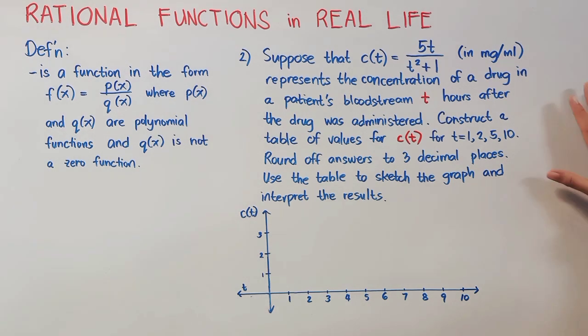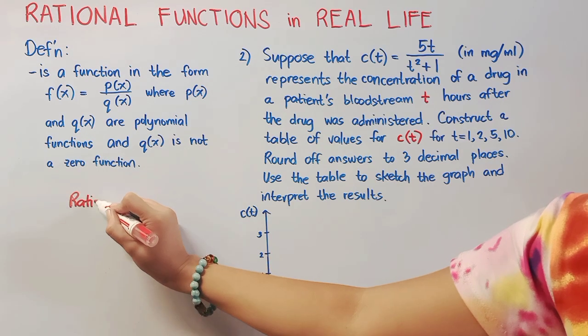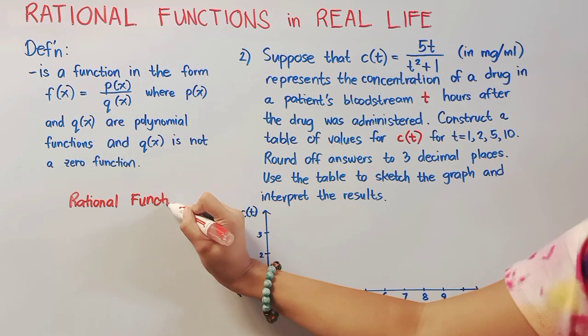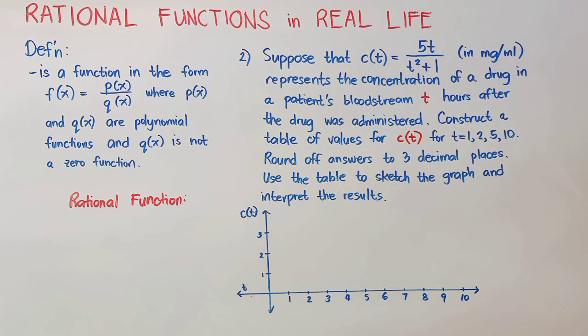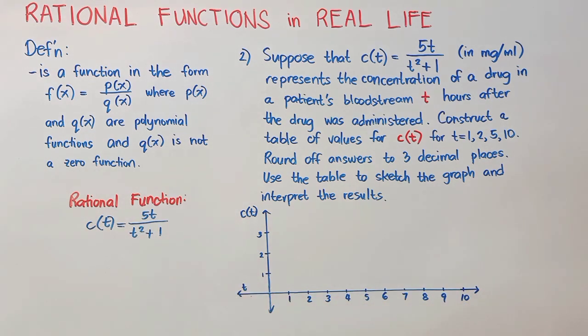Number 2. Suppose that c(t) equals 5t over t squared plus 1 in mg per milliliter represents the concentration of a drug in a patient's bloodstream t hours after the drug was administered. Construct a table of values for c(t) for t equals 1, 2, 5, 10. Round off answers to 3 decimal places. Use the table to sketch the graph and interpret the results. Now, first thing first, our rational function is already given, so we'll just have to copy c(t) equals 5t over t squared plus 1.